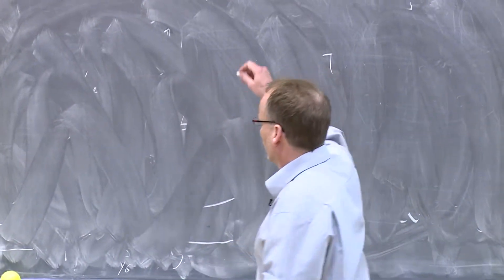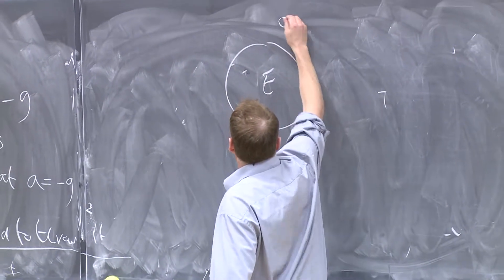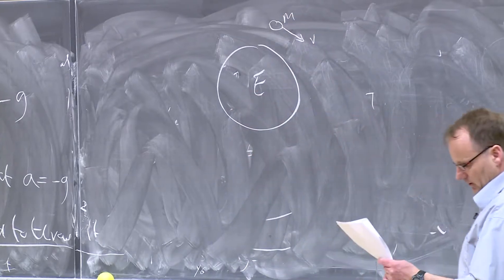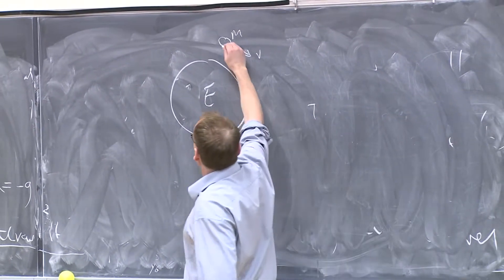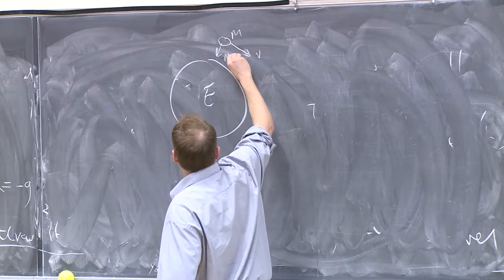So let's draw the ball again. Here's the Earth. Here's the ball. Now it's in orbit. It has a velocity v, a mass m, which means that it has a weight of mg.